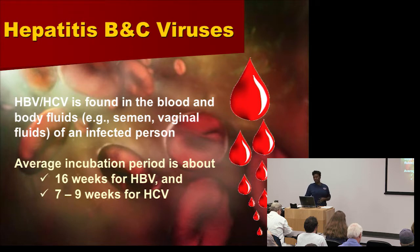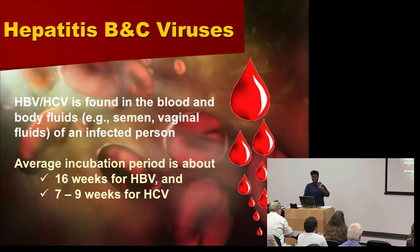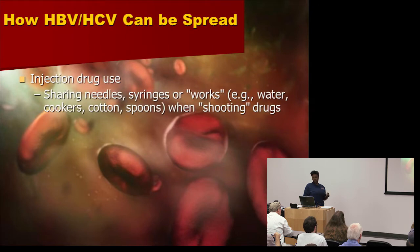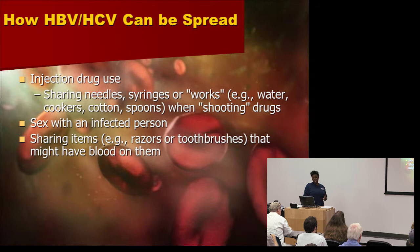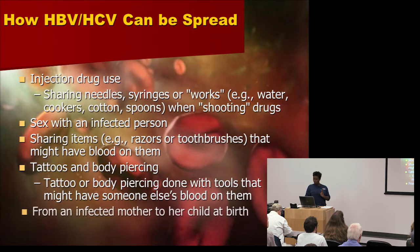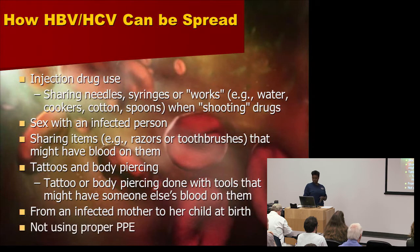Hepatitis B and C are found in the blood and bodily fluids such as semen or vaginal fluids of an infected person. The average incubation period is about 16 weeks for hepatitis B and 7 to 9 weeks for hepatitis C. These viruses can be spread through injection drug use — sharing needles, syringes, or works such as water cookers, cotton spoons.